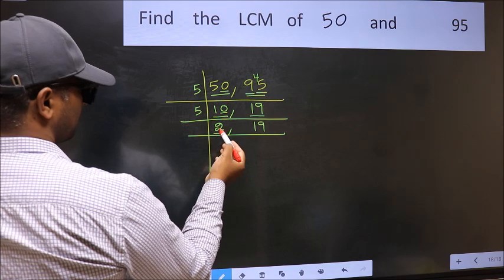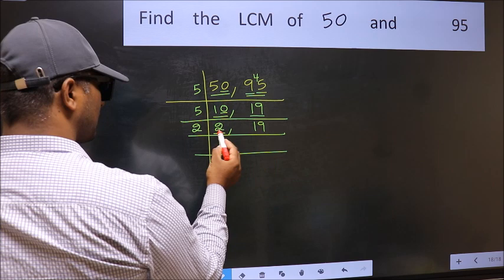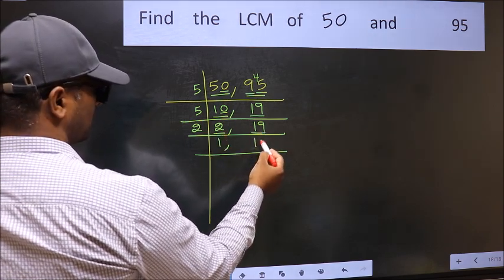Now here we have 2. 2 is a prime number so 2 once is 2. The other number 19 is not divisible by 2 so you write it down as it is.